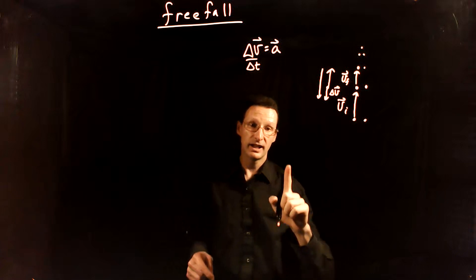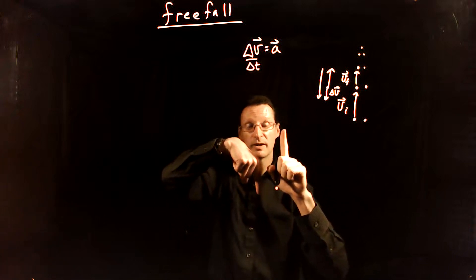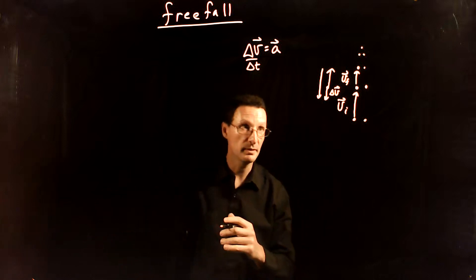Therefore the acceleration vector points down on the way up, and this makes sense. The velocity is up, the acceleration is down. Therefore it must be slowing down. That's consistent with what we've talked about before.